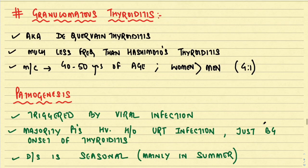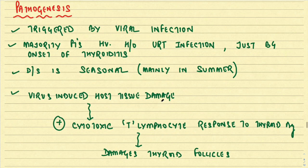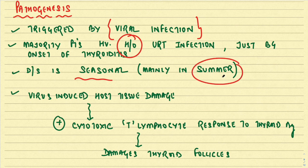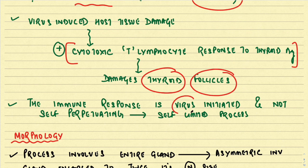The next type is granulomatous thyroiditis, also known as de Quervain's thyroiditis. It is less frequent than Hashimoto's and affects women more than men of middle age. It is usually triggered by viral infection — most patients have a history of upper respiratory tract infection before onset. The disease is seasonal, peaking in summer. Viral infection induces cytotoxic T lymphocytes to act against thyroid antigens, damaging thyroid follicles. The immune response is virus-initiated and not self-perpetuating, so the disease process resolves — it is self-limited and does not require treatment.